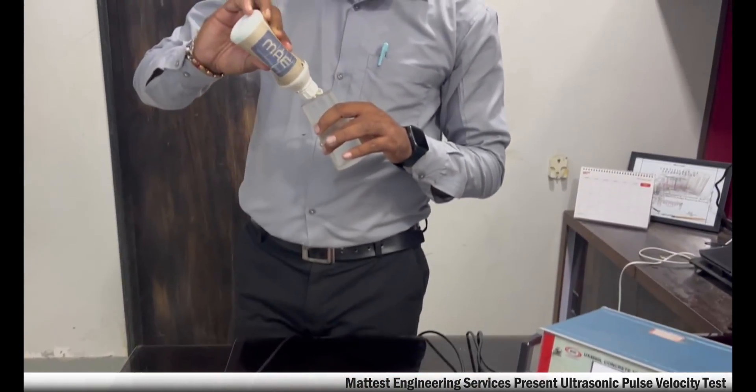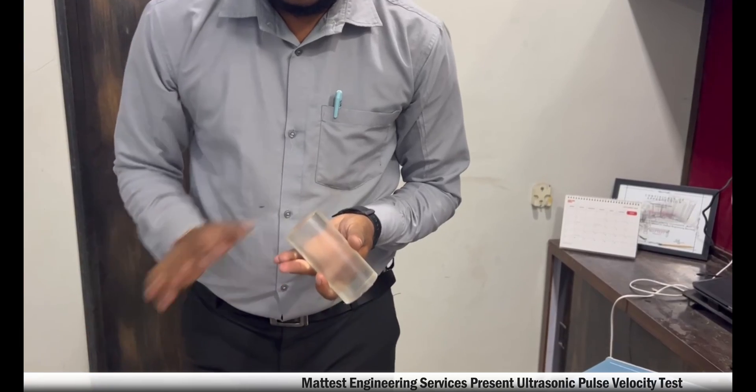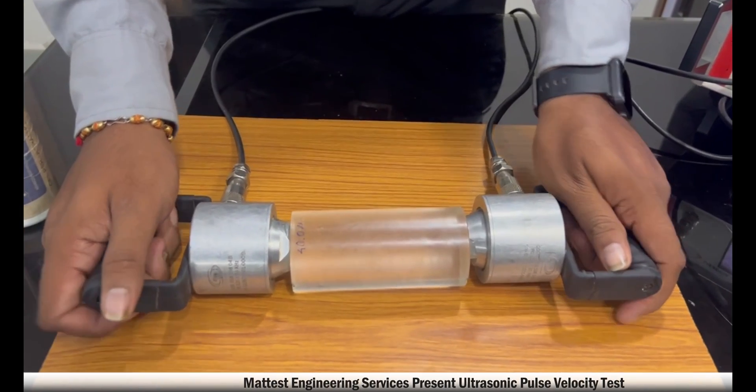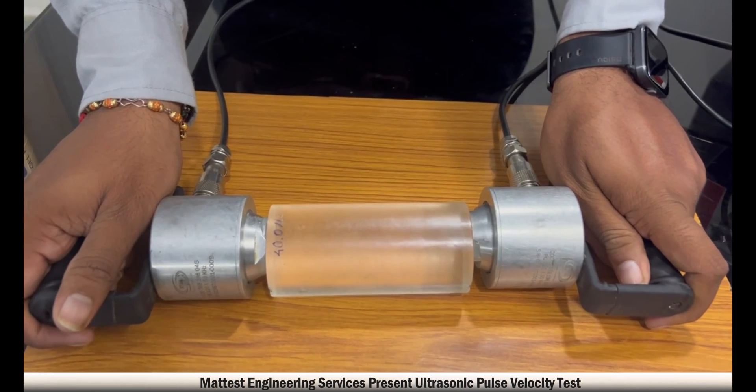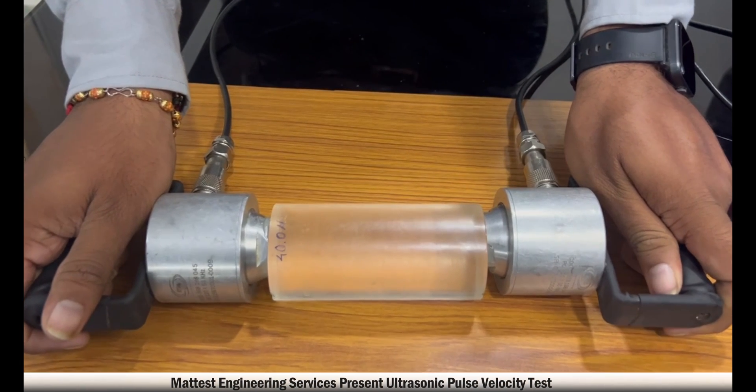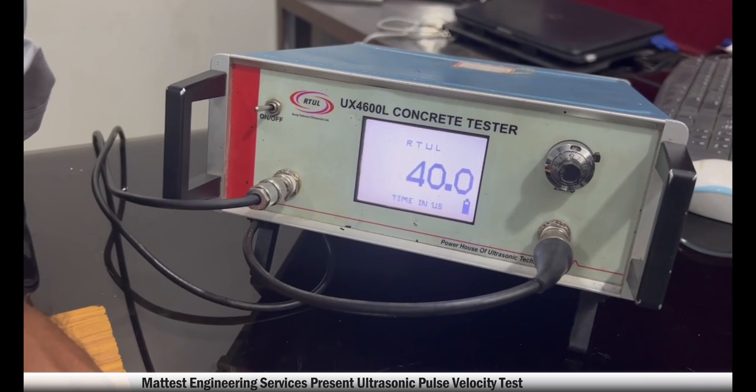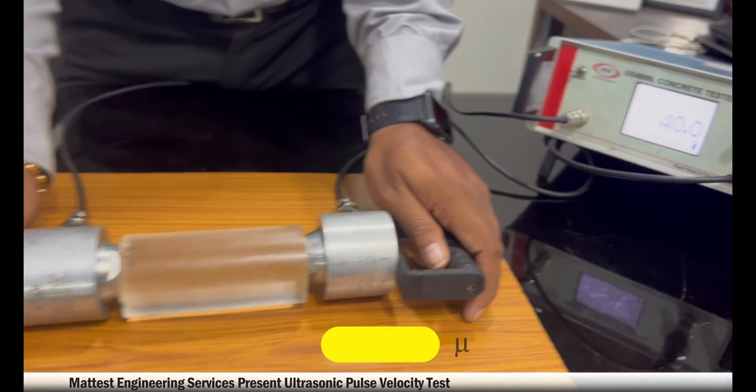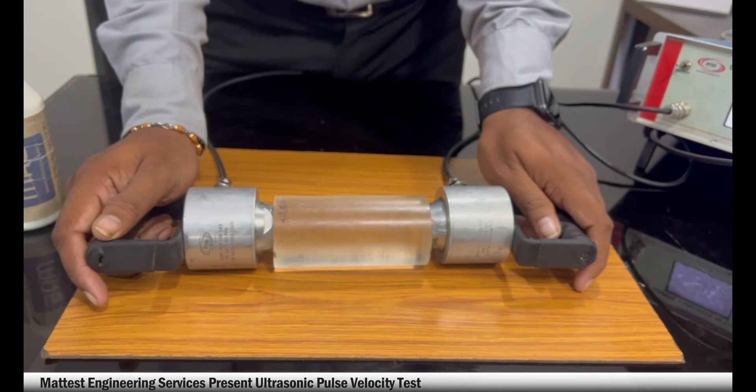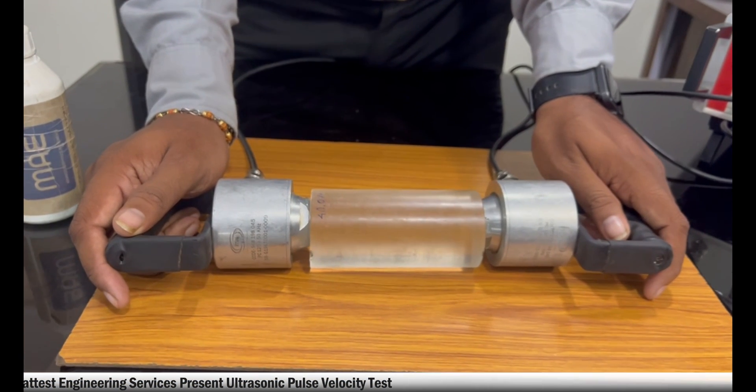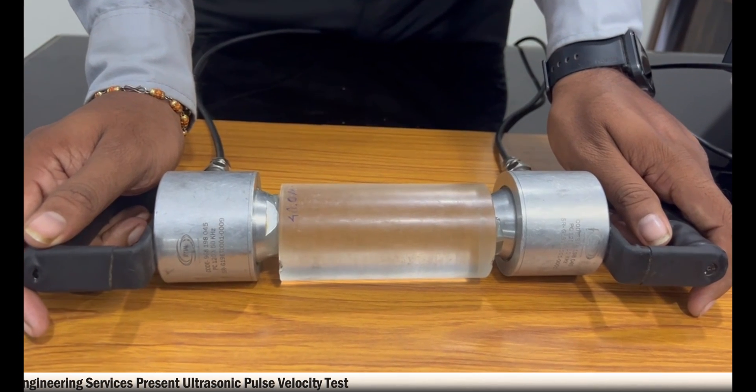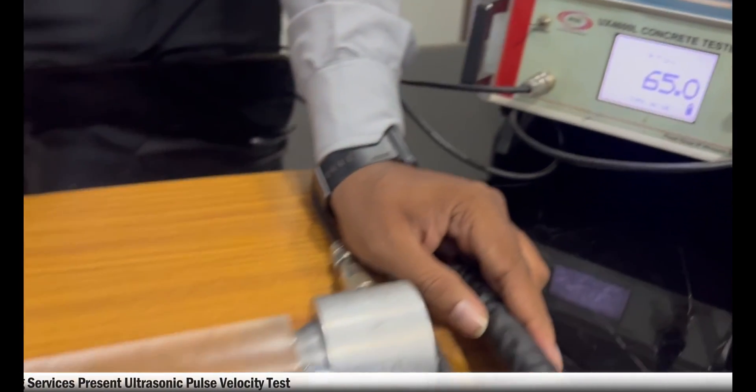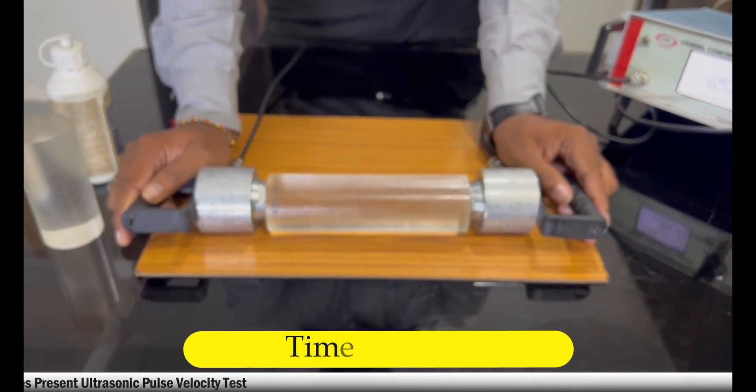Apply a gel on the standard calibration bar. Place the standard calibration bar between the transducers. Measure the time it takes for the pulse to travel through the material. Compare the measured velocity with the known velocity of the material. Adjust the UPV machine's settings or calibration factor as needed to match the known velocity. Repeat the same procedure for 65 micron standard bar.